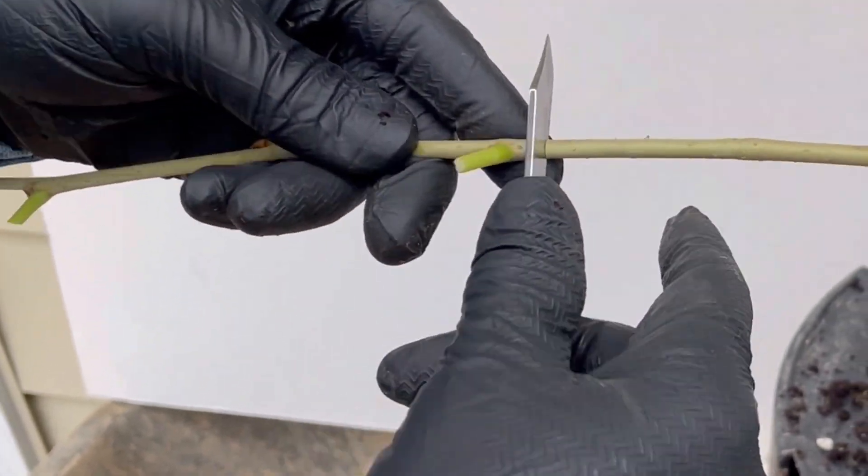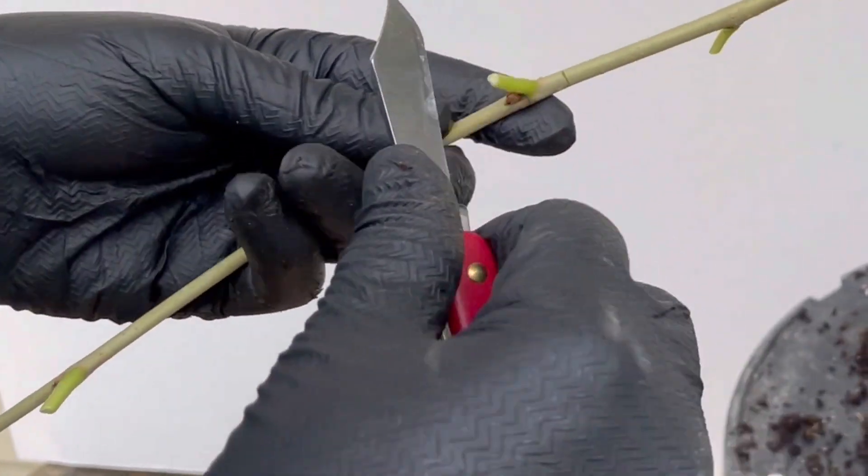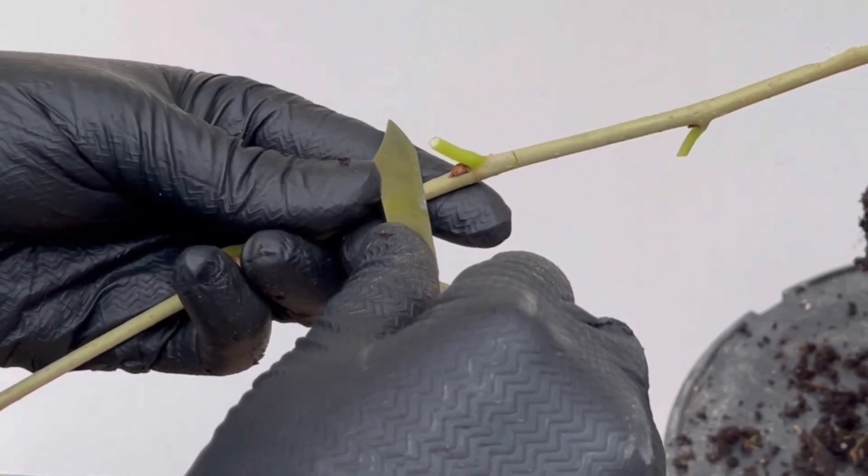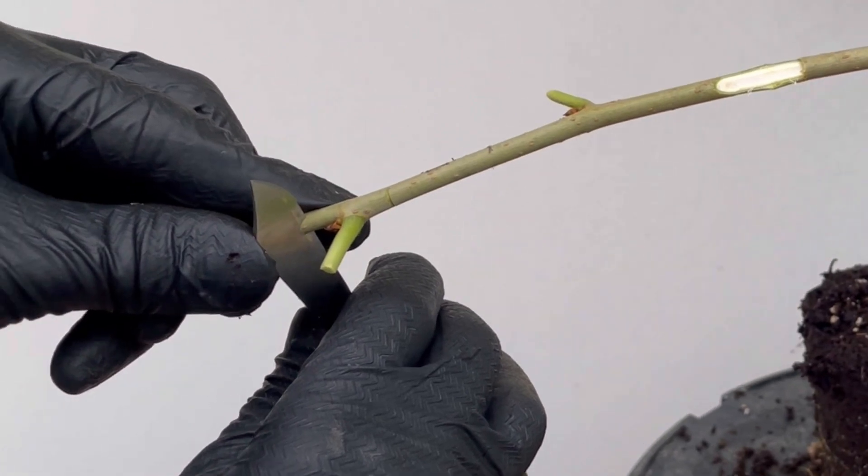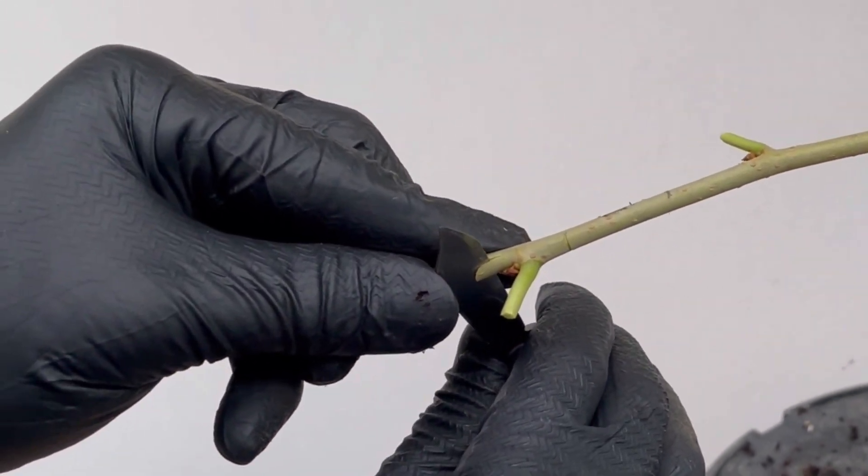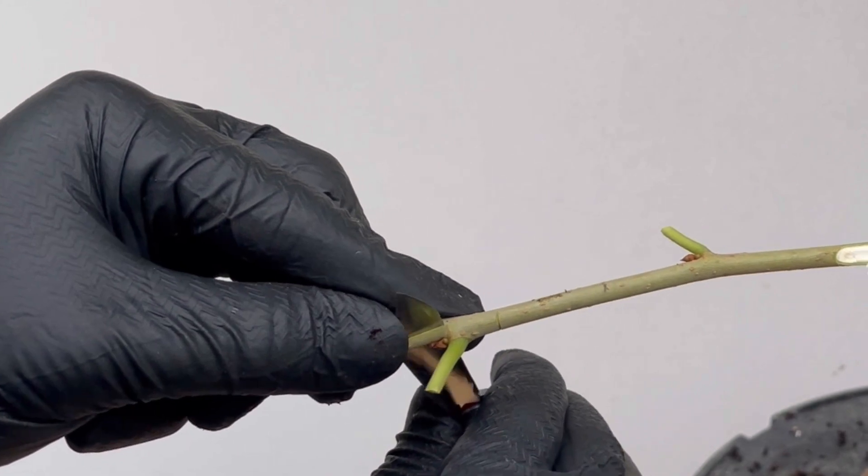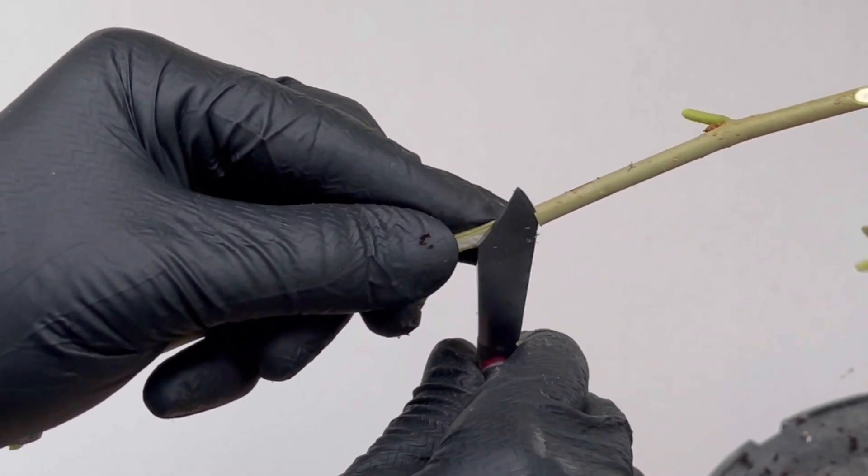There we go, cut about a little more than halfway. I'll come in at a 45 and then just kind of rock up and let the wood split down towards that first cut.